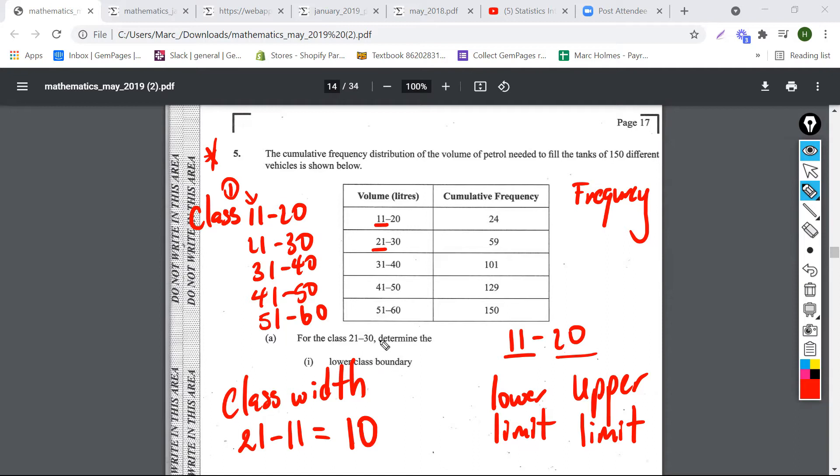Let me do another example. If I subtract 31 from 41, that will also give me the class width. So 41 minus 31, this gives me the class width, which is 10.